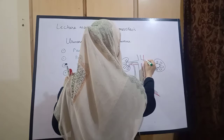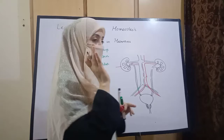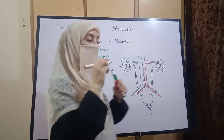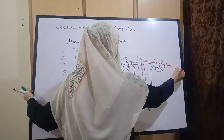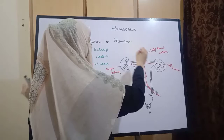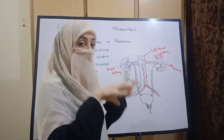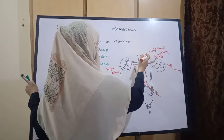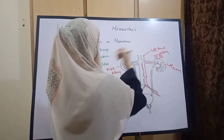Left renal artery اور right renal vein۔ اب اس diagram کو label کرتے ہیں۔ Right side پے right kidney، left side پے left kidney۔ یہ ہے right kidney اور یہ ہے left kidney۔ یہ ہے left renal artery جو oxygenated blood لے کے kidney کی طرف جاتی ہے۔ 'Renal' وہ word ہے جو kidney کے لیے استعمال ہوتا ہے۔ Left renal artery right kidney اور left kidney دونوں کی طرف oxygenated blood لے کے جائے گی۔